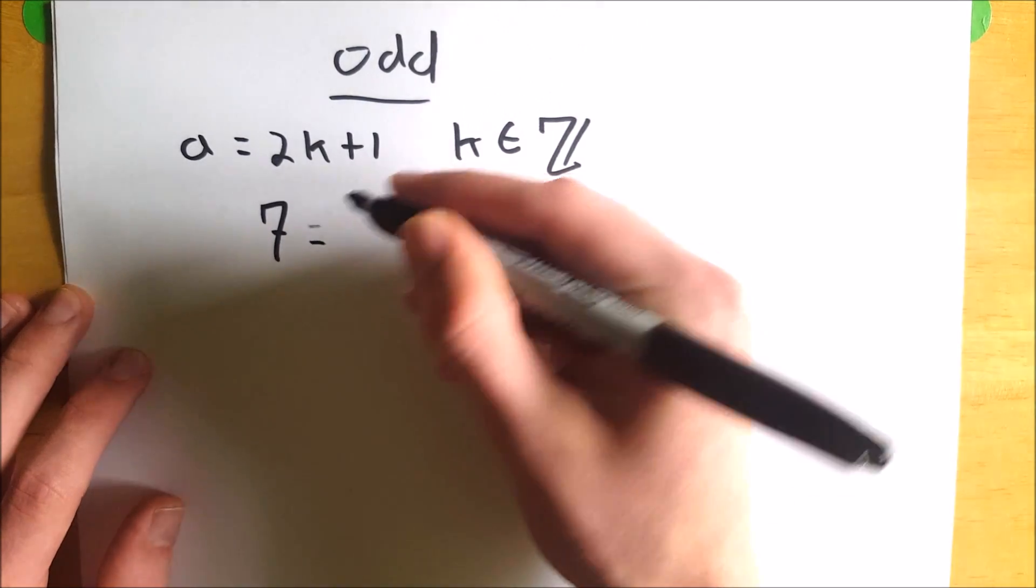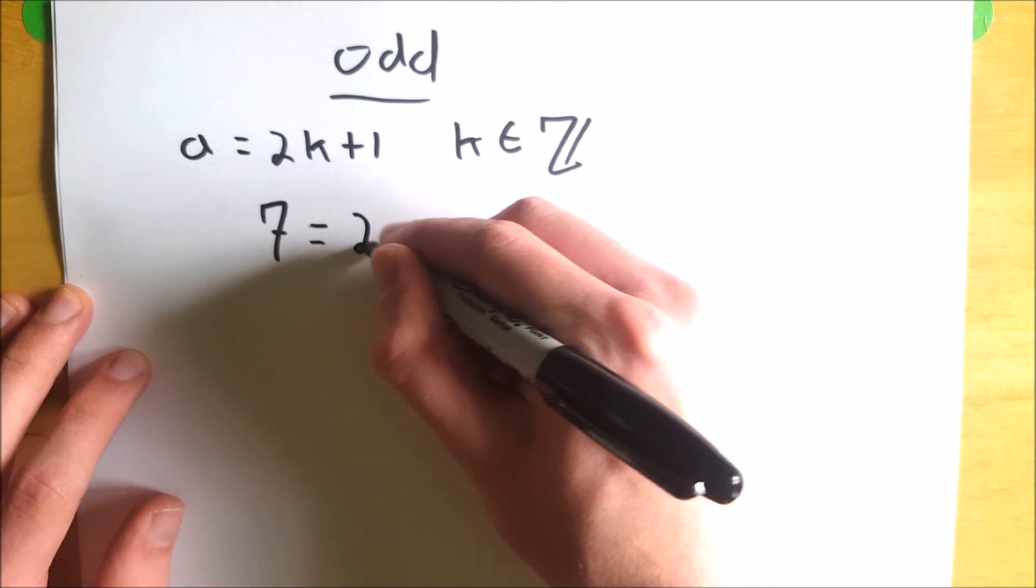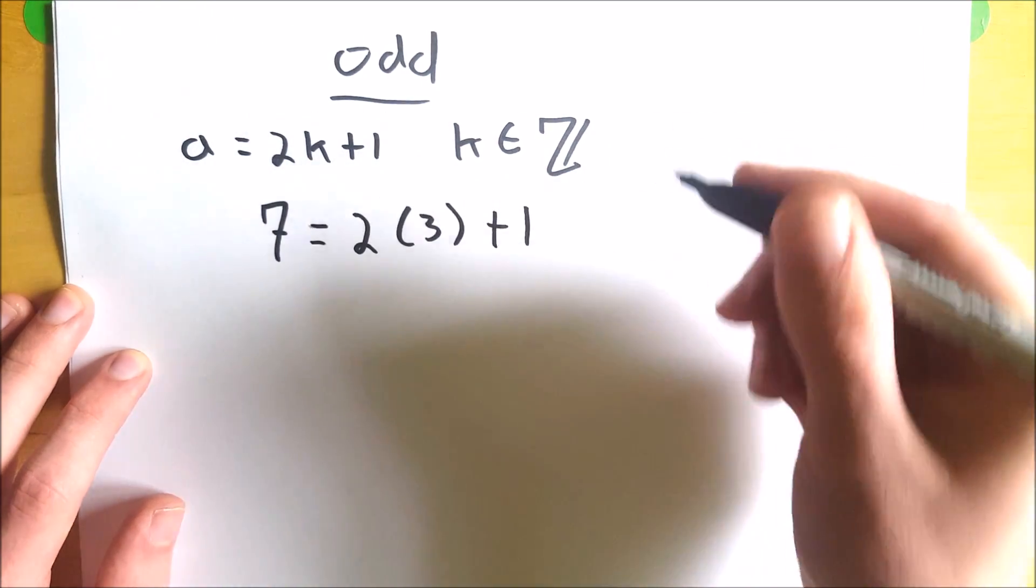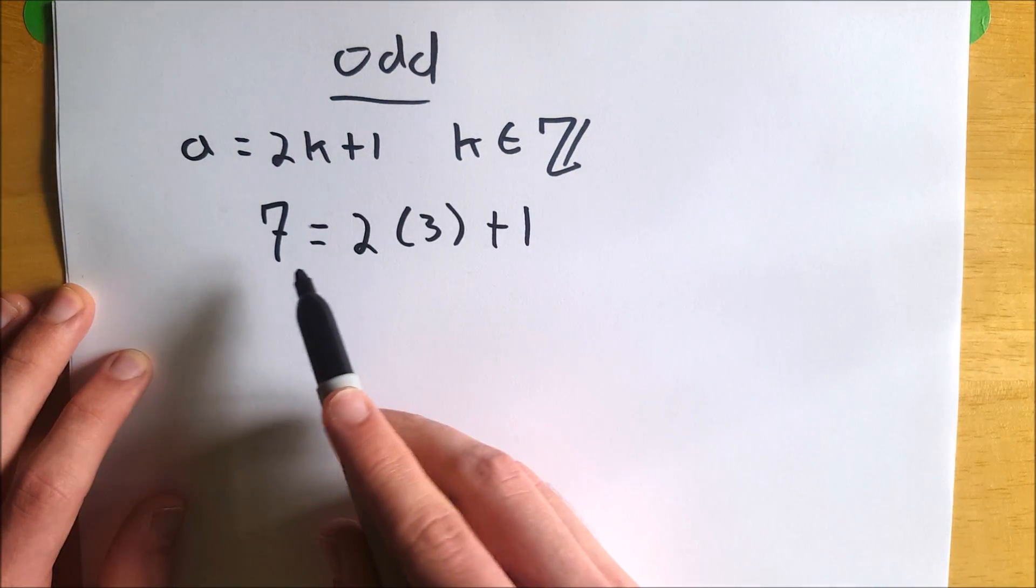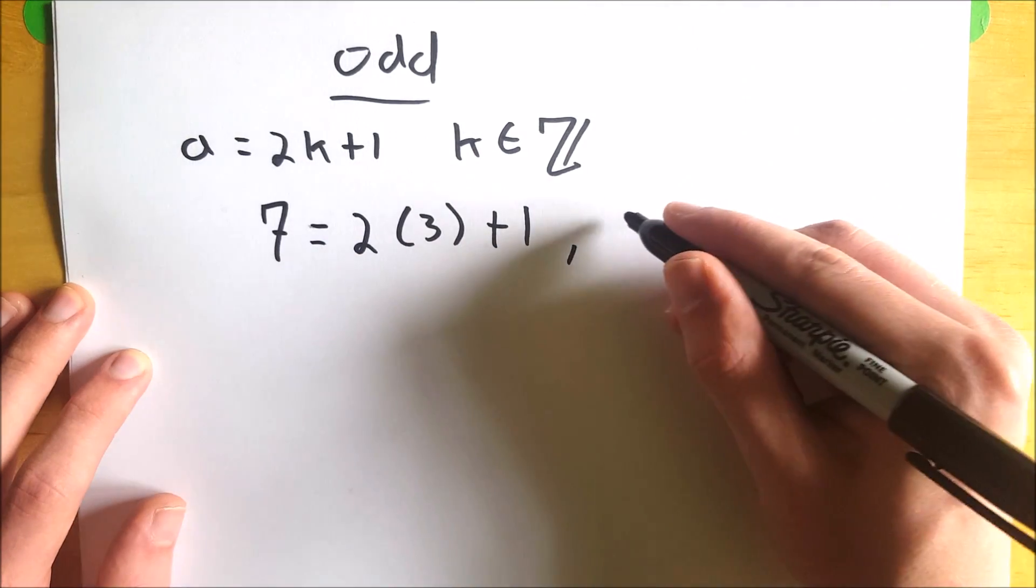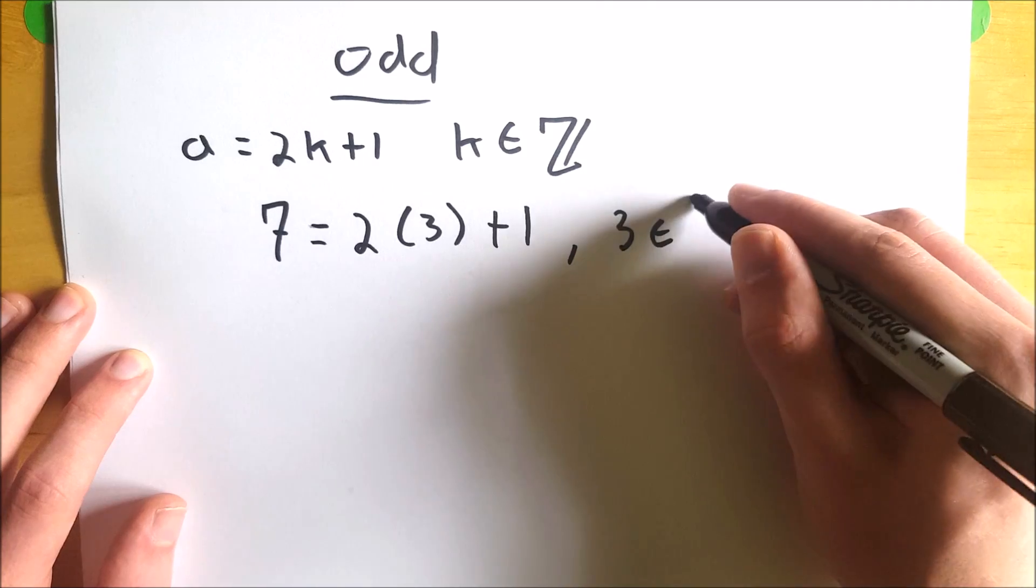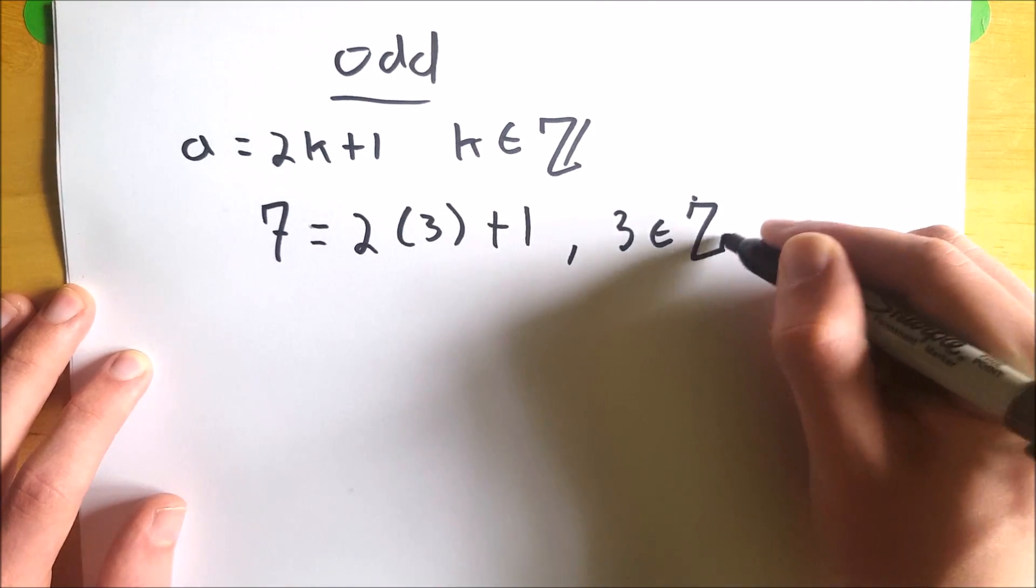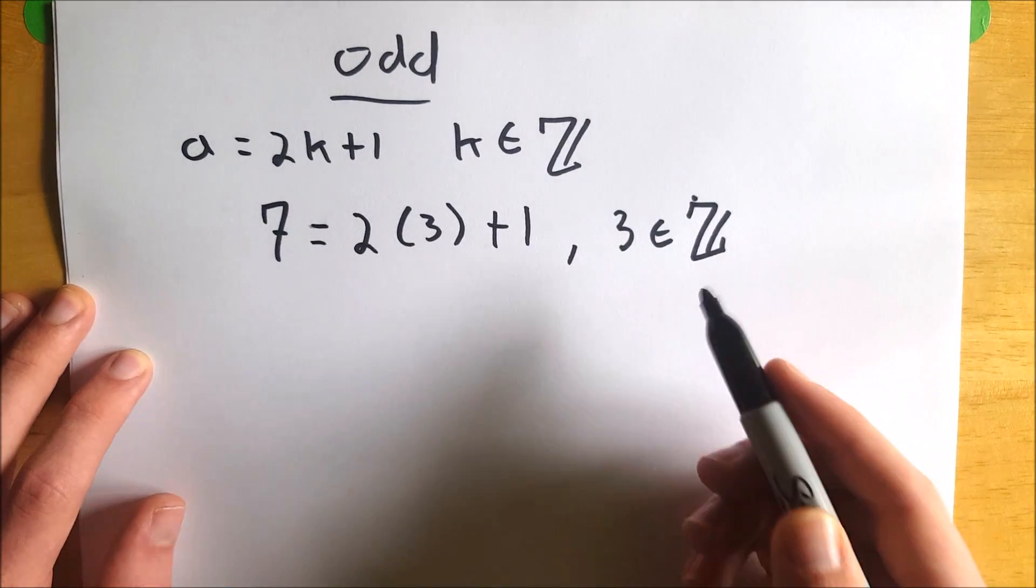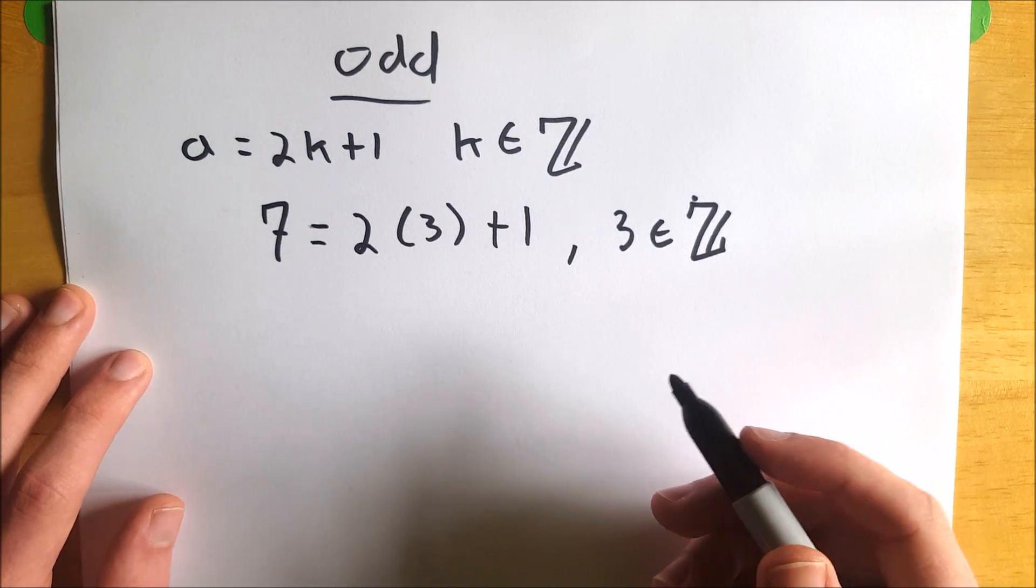Well, we can show that it is equal to 2 times 3, which is 6 naturally, plus 1 is 7. So because 7 is equal to 2 times some integer 3, we can say that 3 is an element of the integers. Because 7 is equal to 2 times some integer plus 1, we know that 7 is odd.